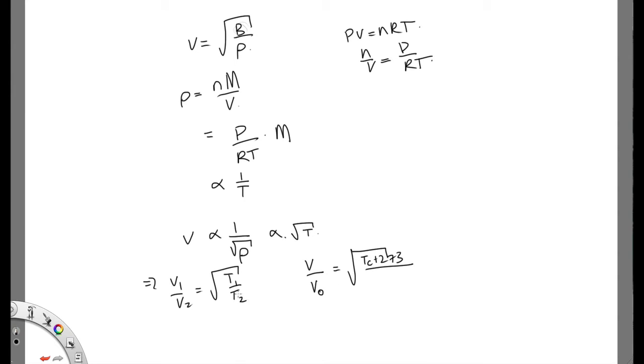So the velocity at some temperature over the velocity at 0 degrees C is equal to the square root. Now, this was the ideal gas law. So these ones are in kelvins. So this is T, let's call it Tc plus 273. This is the temperature in Celsius over the temperature at 0 degrees C, which is the 273. So this gives us V is equal to V0, the speed at 0 degrees C, times the square root of 1 plus then we've got the Tc over 273. So that's derived this equation here.